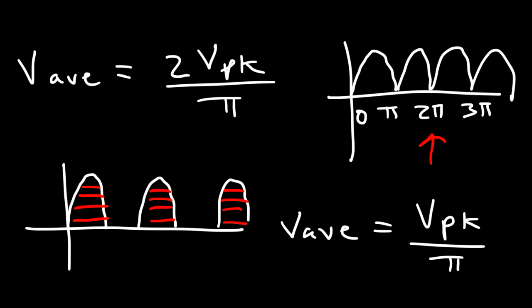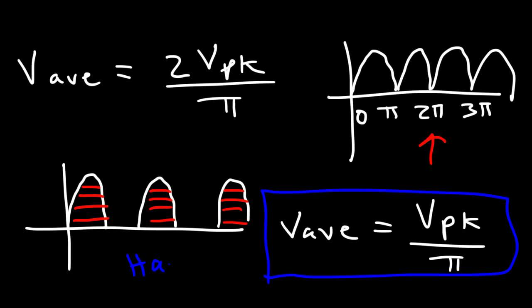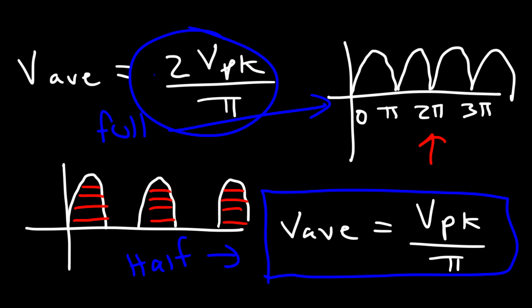So V_peak over pi is the case for a half-wave rectifier, but for a full-wave rectifier — which I'll cover in another video — it's going to be twice the value: 2 times V_peak over pi. That's how you derive the formula to calculate the average DC voltage for either a half-wave or full-wave rectifier. Feel free to check out my video on full-wave rectifiers. Thank you.